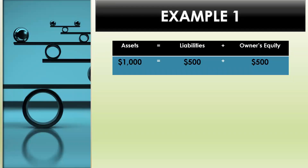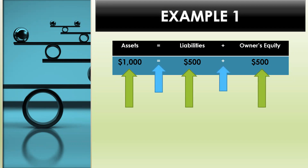Let's see what this looks like in action. In example one, we are given assets equal $1,000, liabilities are $500, and owner's equity is $500. Assets equal liabilities plus owner's equity — $1,000 equals $1,000. Here, the left side is equal to the right side.